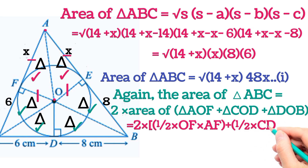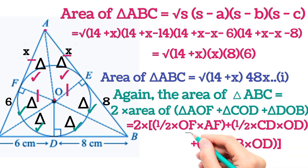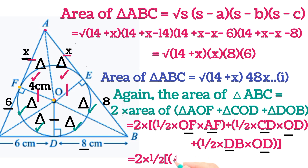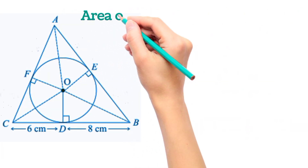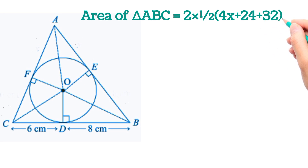Substituting: OF = 4 cm (radius), AF = x; CD = 6, OD = 4 cm (radius); DB = 8, OD = 4 cm (radius). This gives: area = 2 × (½ × 4 × x + ½ × 6 × 4 + ½ × 8 × 4) = 2 × ½ × (4x + 24 + 32) = 56 + 4x.